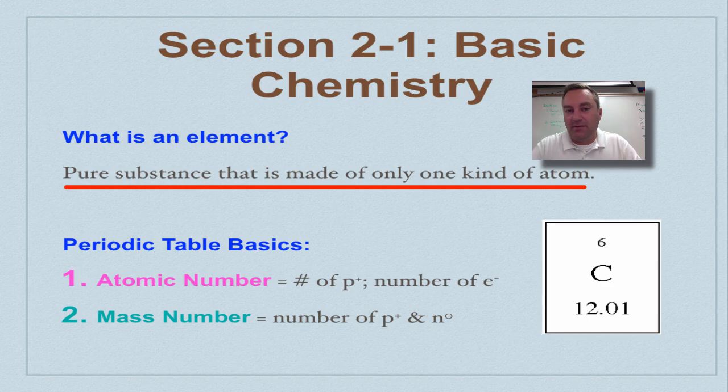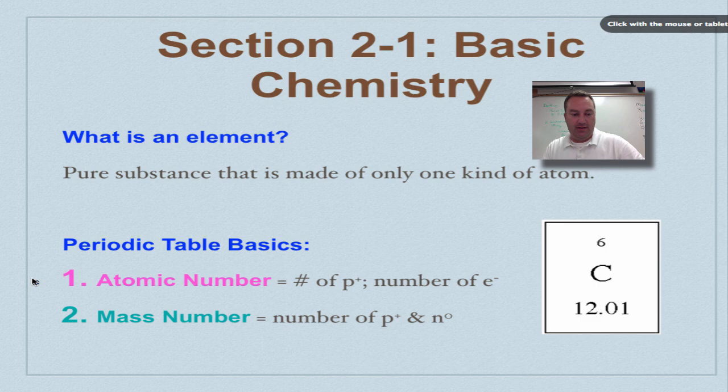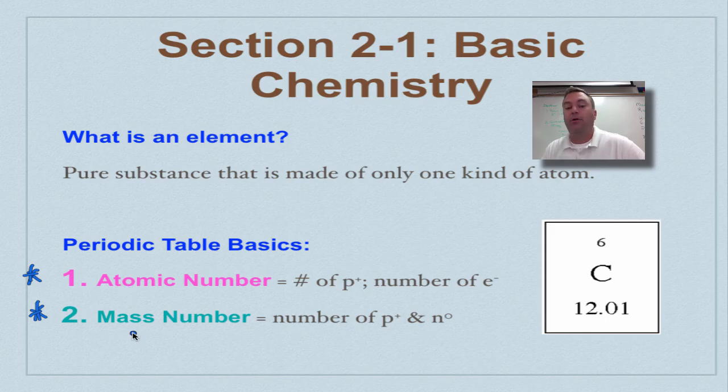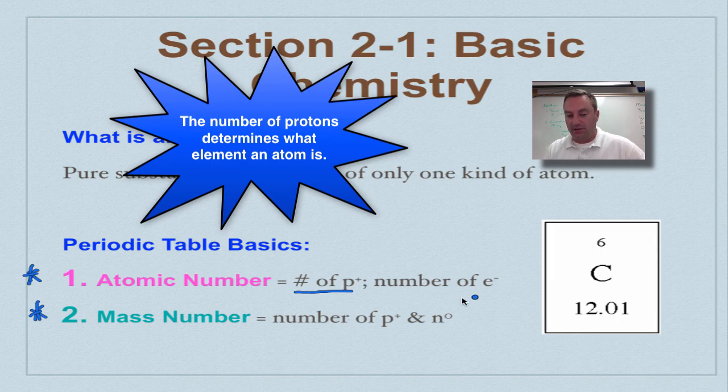What is an element? An element is simply one type of atom. And an element is based upon the atomic number. So these are periodic table basics. And I want to make sure that you understand these. The atomic number is the number of protons. And this is going to determine what element it is. And it also tells you the number of electrons if it's going to be neutral.